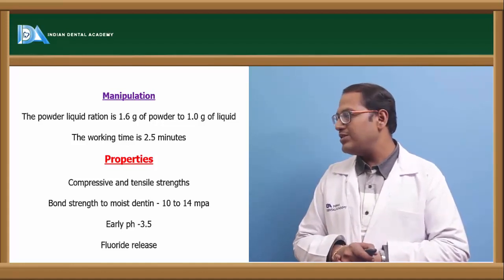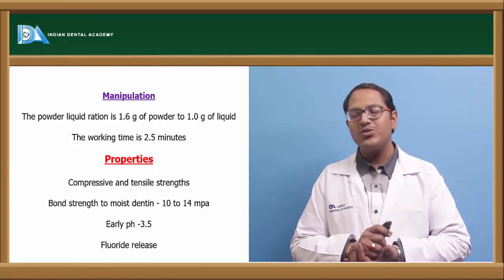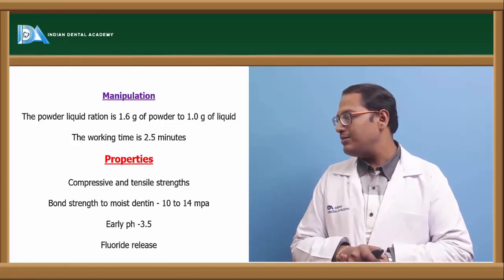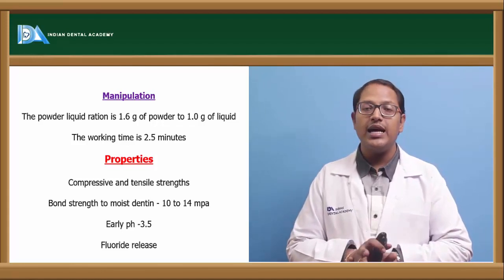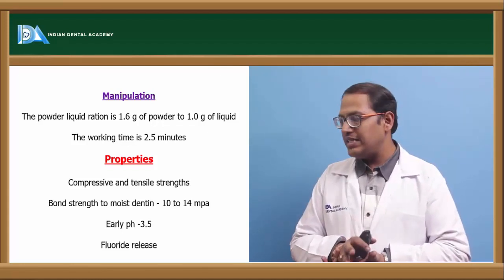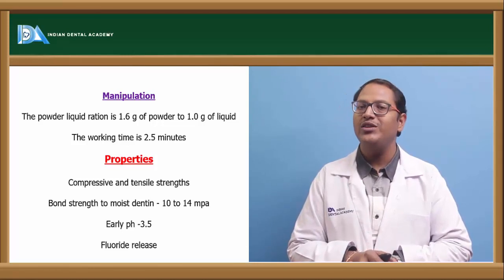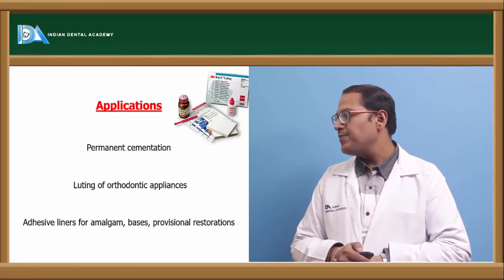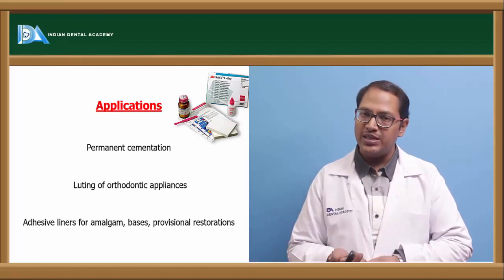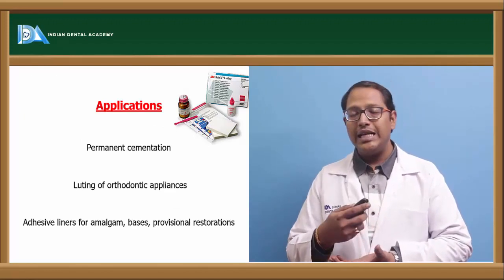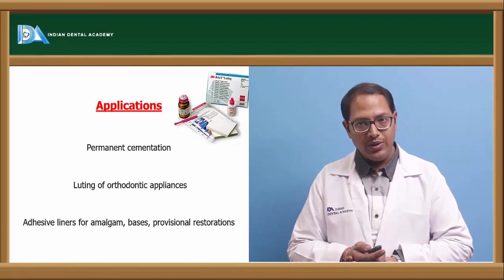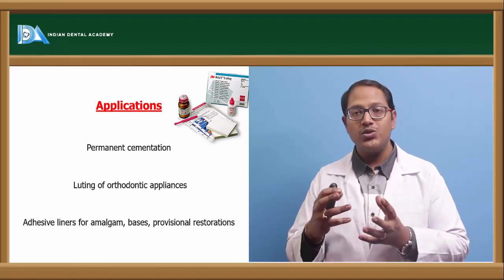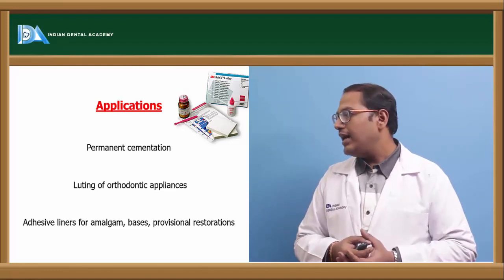The hybrid ionomer cement has good compressive and tensile strengths, with bond strength to dentine of 10 to 14 MPa. The early pH rises to about 3.5 — acidic — but it also has fluoride-releasing capacity. Working time is around 2.5 minutes. It can be used for permanent cementation, luting orthodontic wires, liners for amalgam or braces, and provisional restorations.